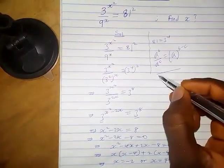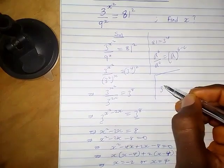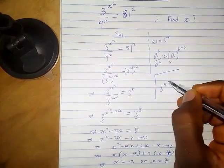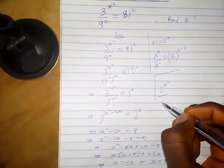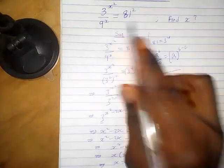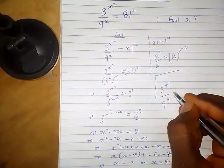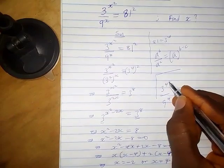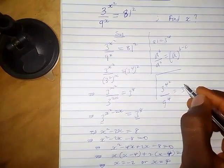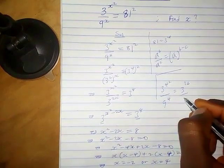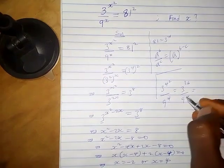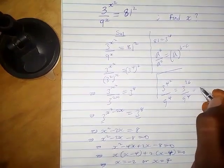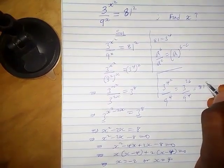When x equals 4, we plug it into the equation. We have 3 raised to 4 squared over 9 raised to the power 4. So we have 3 raised to the power 16 over 9 raised to the power 4. When you plug this into your calculator, you obtain 81 squared.